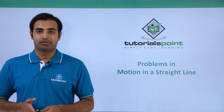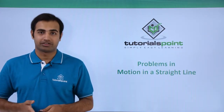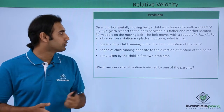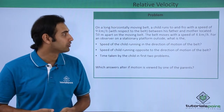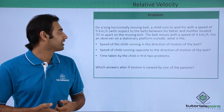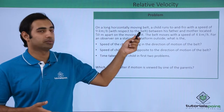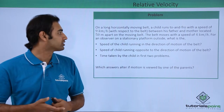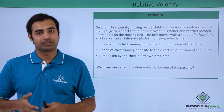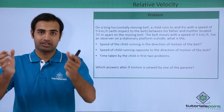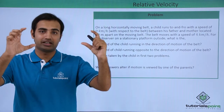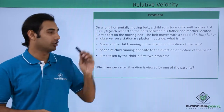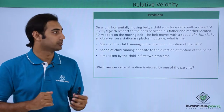Let's talk about another problem in relative velocity. The question says: on a long horizontally moving belt, a child runs to and fro with a speed of 9 km per hour with respect to the belt, between his father and mother located 50 meters apart on the moving belt. There is a conveyor belt on which the parents are standing — mother and father — and the child runs between them at 9 km per hour with respect to the belt.